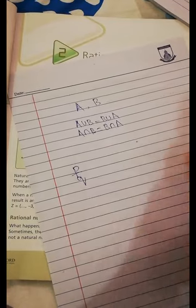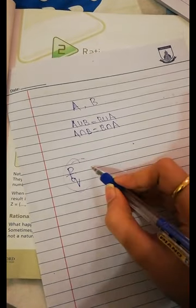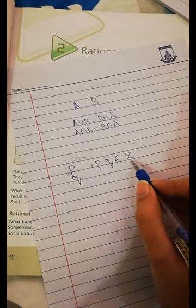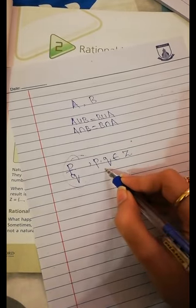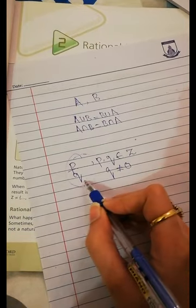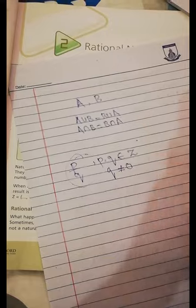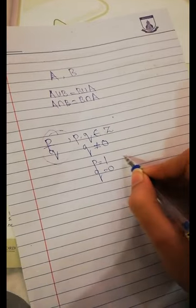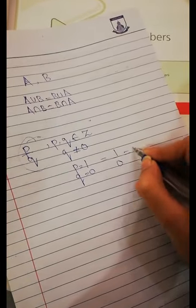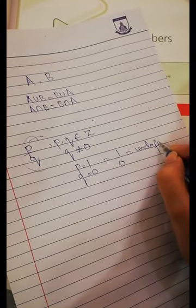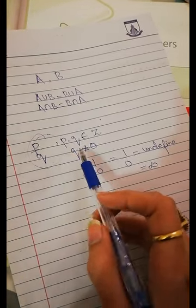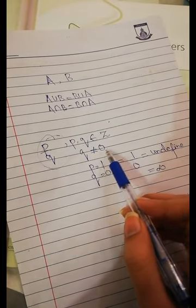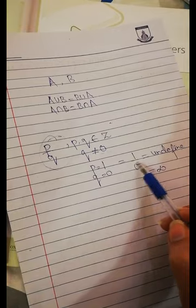Rational numbers are numbers which we can write in p/q form, where p and q belong to integers, and the condition is that q is not equal to zero. Because if q equals zero then we get an undefined form — in maths, 1 by 0 is undefined. There is no value equal to infinity, so the condition is that q must not equal zero.